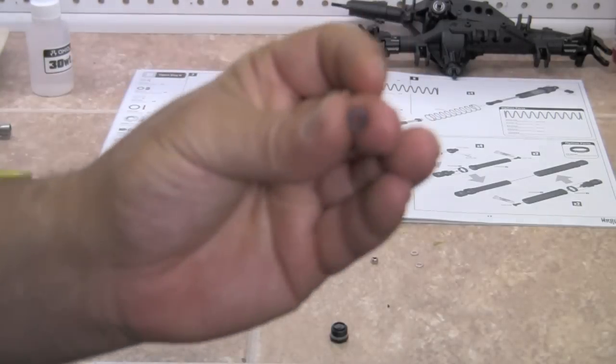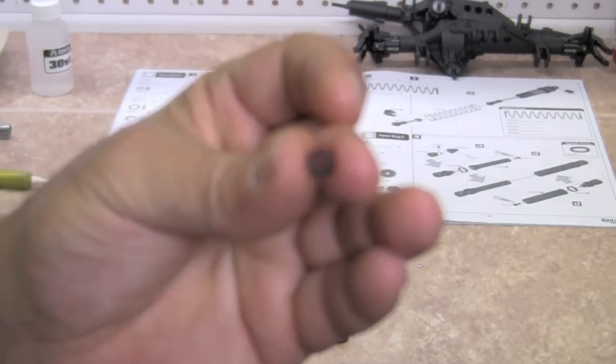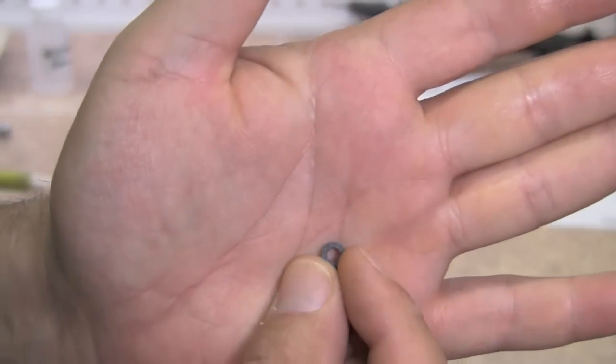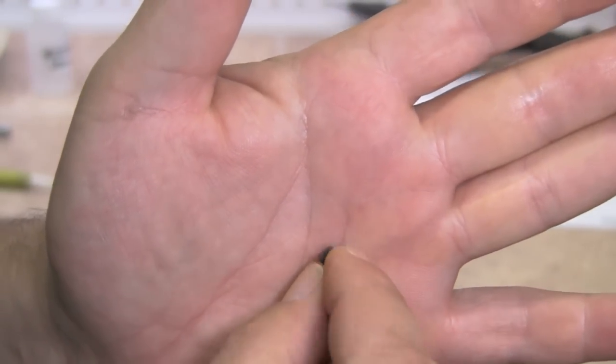The 5. Now this is labeled dash-4 in the manual, and basically it's just a little plastic spacer.